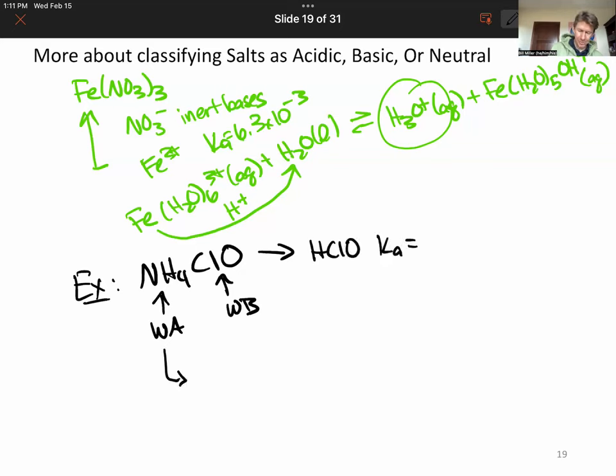NH3 has a Kb value of 1.76 times 10 to the minus 5th. The HClO value, going to my Ka list, hypochlorous: 2.9 times 10 to the minus 8.